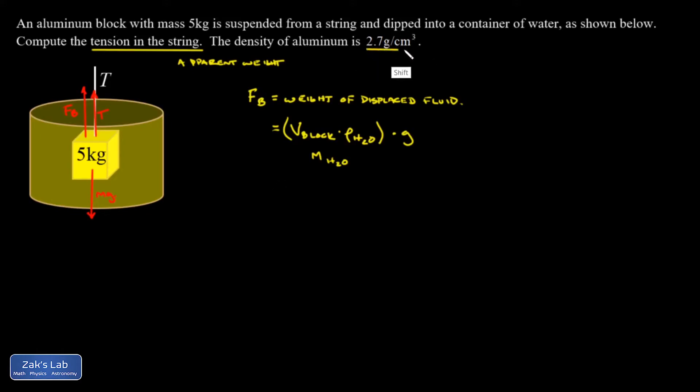do have the mass and the density. If I convert the density into the proper units, it's just a factor of a thousand, so it's 2700 kilograms per cubic meter. I use the definition of density—mass per unit volume—turn it around, and I get that the volume of the block is the mass over the density.